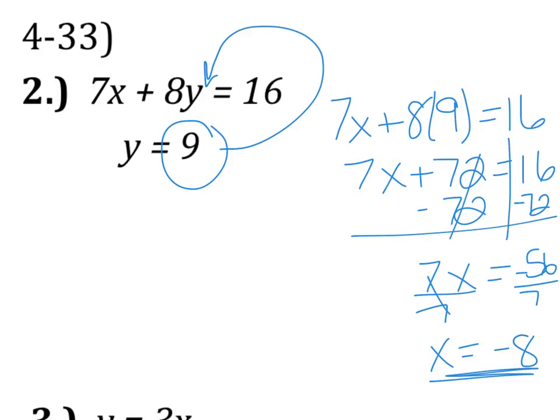Now we know X is negative 8, we know Y is 9, so all we have now is just to write our ordered pair, negative 8 comma 9.